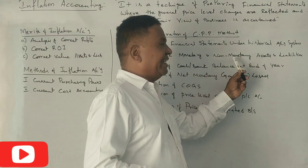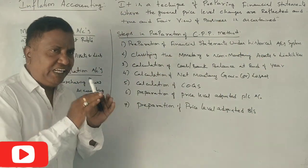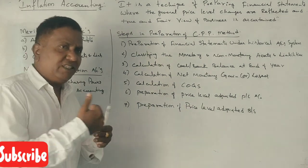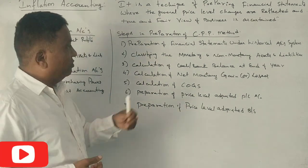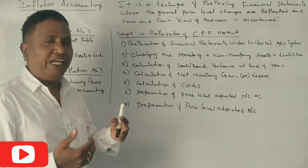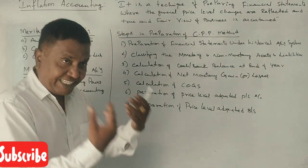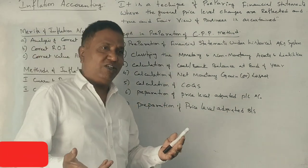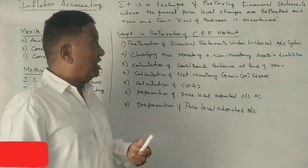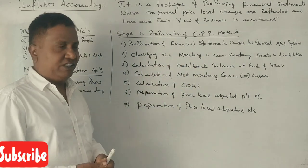The second step is classifying monetary and non-monetary assets. This is an important point. Monetary assets include those that convert to cash quickly — such as cash in hand, cash at bank, debtors, trade receivables, and prepaid expenses. Non-monetary assets take their own time to convert to money.